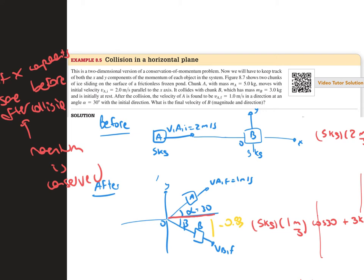After the collision, the velocity of A is found to be 1 meter per second in a direction at an angle of 30 degrees with the initial direction. The question is, what is the final velocity of B, both magnitude and direction?